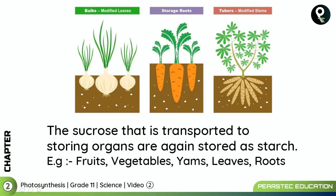A big mechanism — like a machine — is working when you're looking at a plant. You don't see so many transactions happening inside, but it is happening. The starch is ultimately stored in fruits, vegetables, yams, leaves, and roots — whatever you are eating.